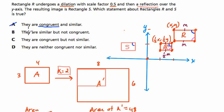They are similar but not congruent. That's correct, right? All the corresponding angles are equal. All of the sides have been changed by a scale factor, in this case one half. So each of the sides in S is half of the corresponding sides in R.